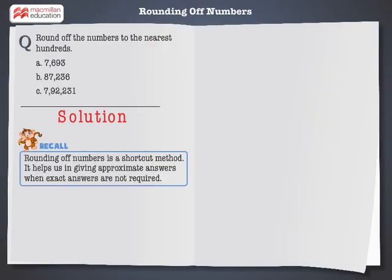Let's recall that rounding off numbers is a shortcut method. It helps us in giving approximate answers when exact answers are not required.